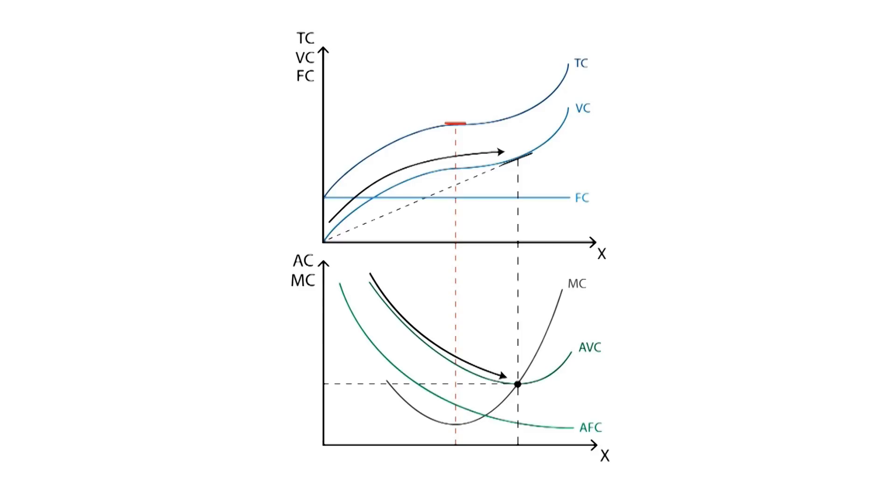Its minimum point matches the point where the marginal cost curve crosses the average variable cost curve. From this point onwards, the average variable cost will increase with every extra unit of output produced, as well as the variable cost in the upper graph.